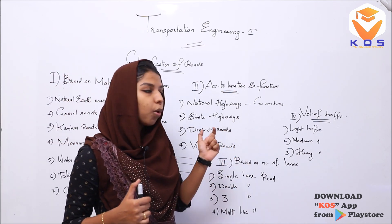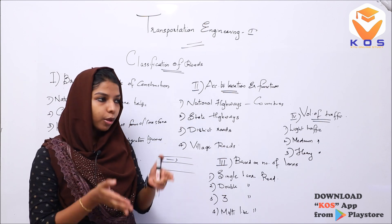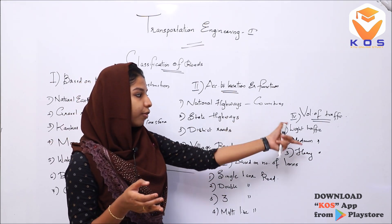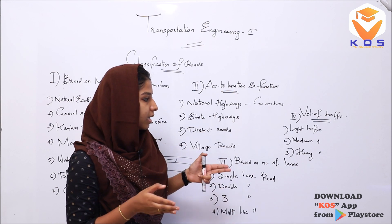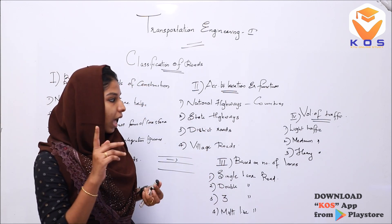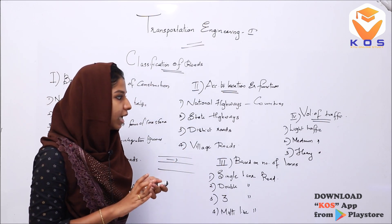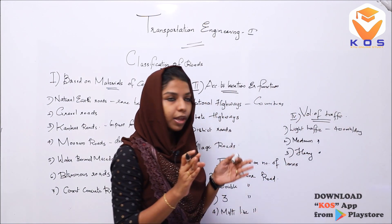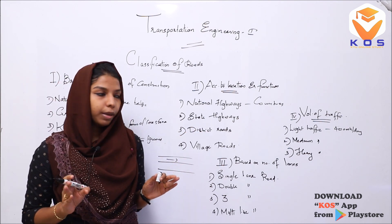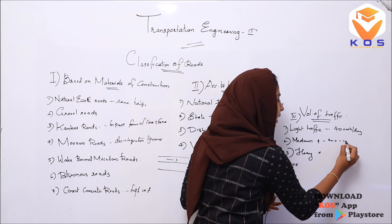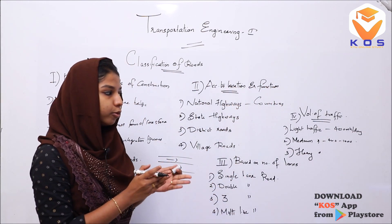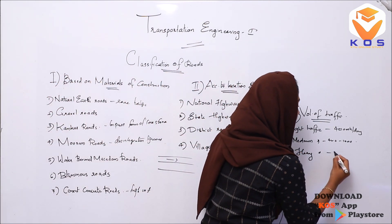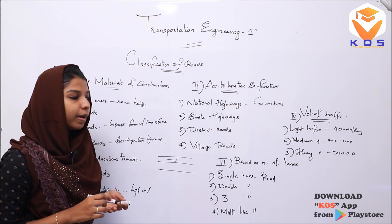The fourth classification is based on volume of traffic. Light traffic is up to 400 vehicles per day. Medium traffic is 400 to 1000 vehicles per day. Heavy traffic is more than 1000 vehicles per day.